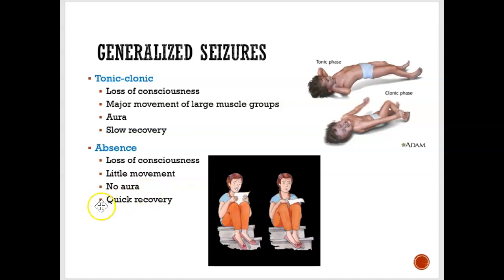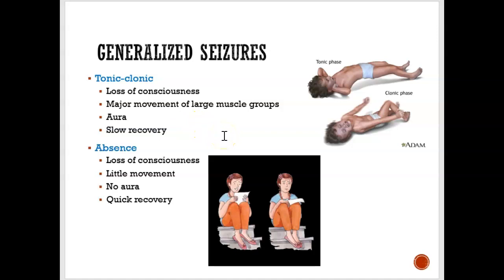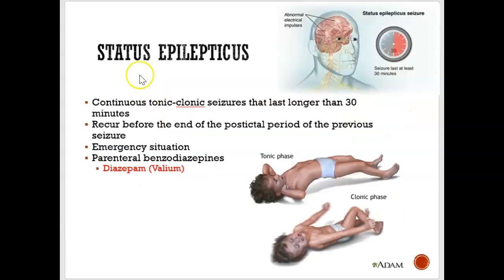Recovery from an absence seizure is quick — you can go right back to your normal routine. With a tonic-clonic seizure, recovery is slow: you feel exhausted, tired, and your limbs feel very weak. With an absence seizure, you can continue on with your day almost immediately after it ends.